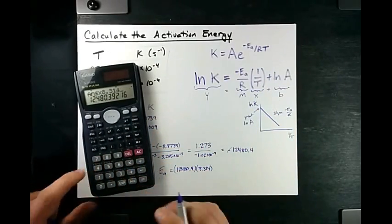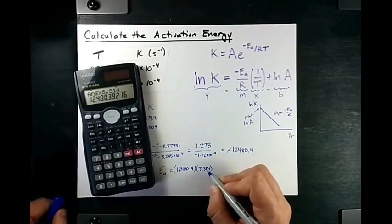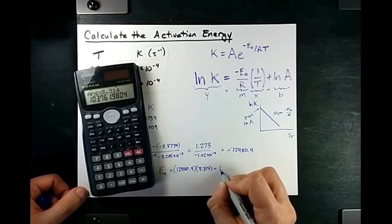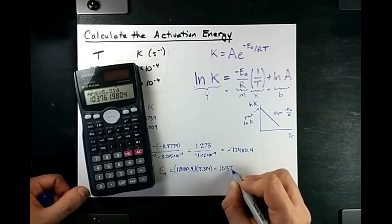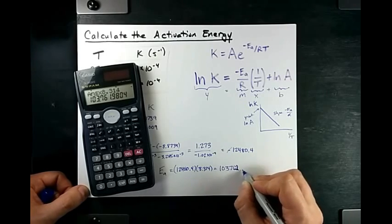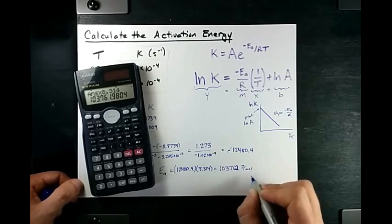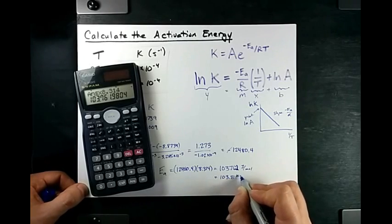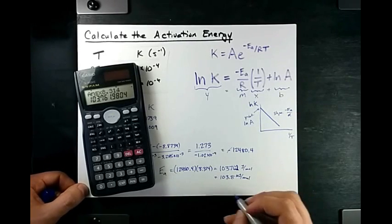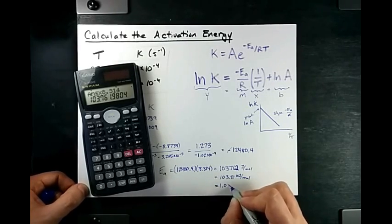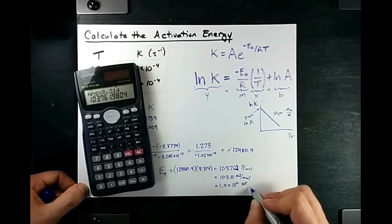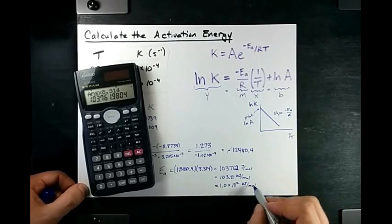I'm using 8.314 because it has units of joules per mole Kelvin. That gives me 103,762 joules per mole, which is 103.8 kilojoules per mole, which if I'm going to put it into sig figs is 1.0 times 10 to the 2 kilojoules per mole.